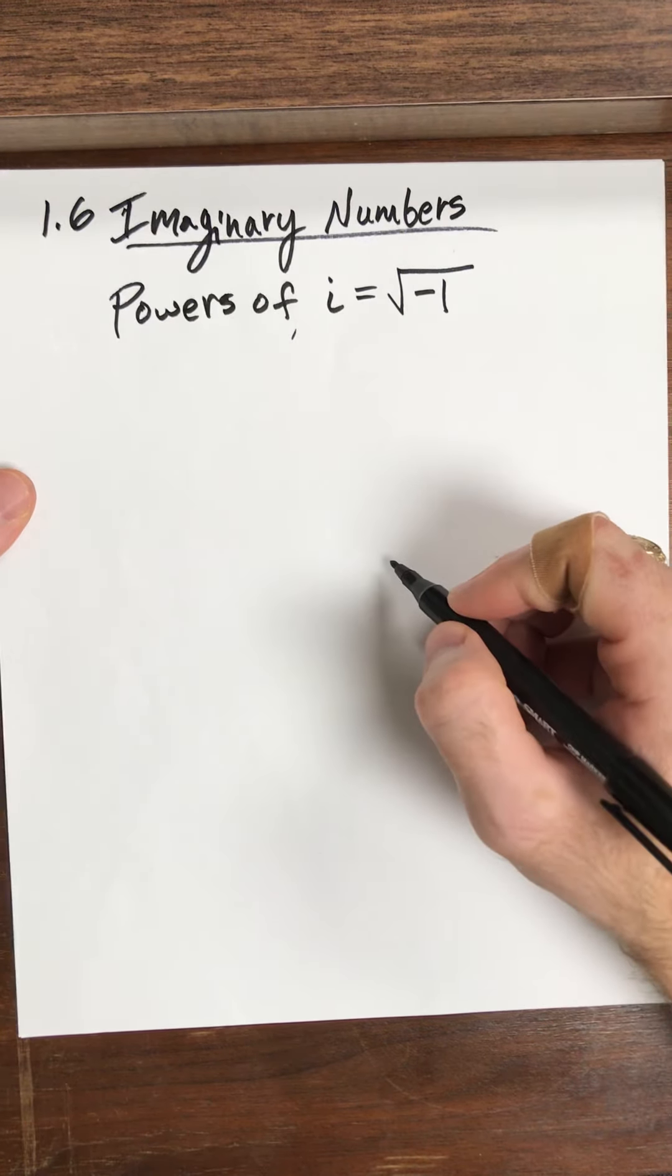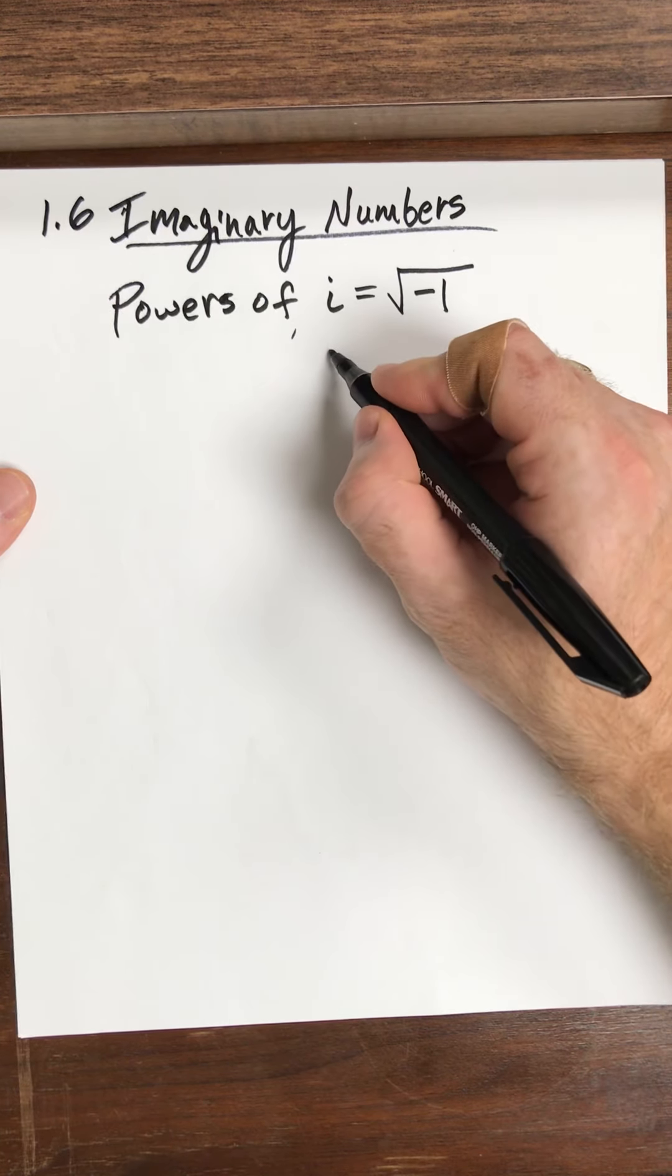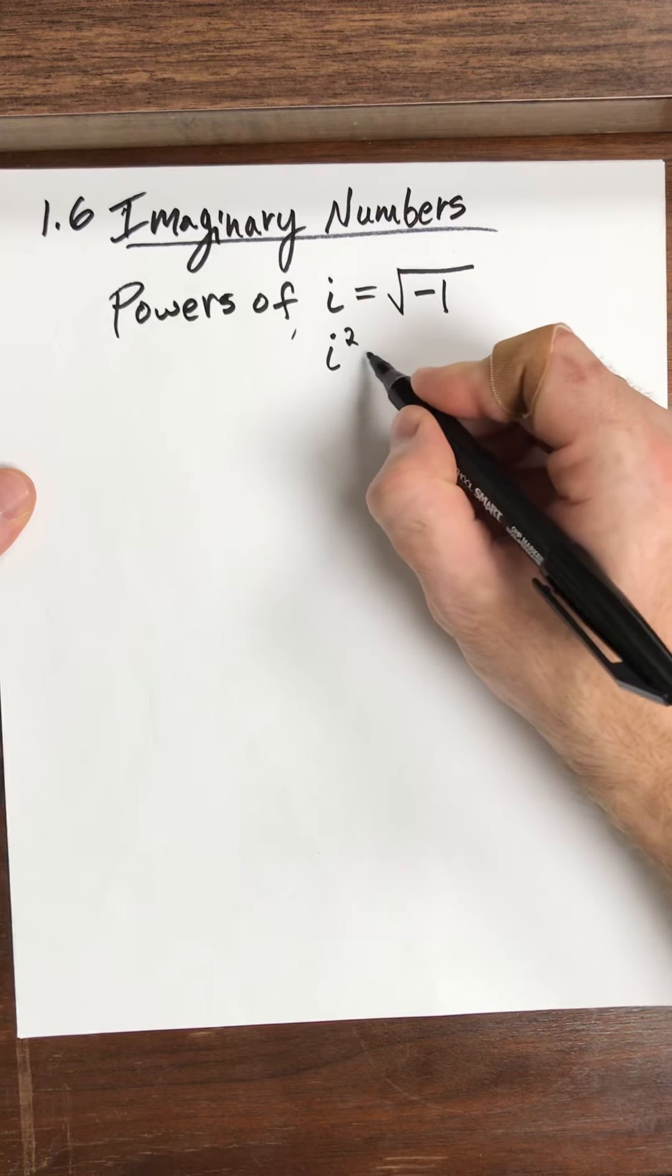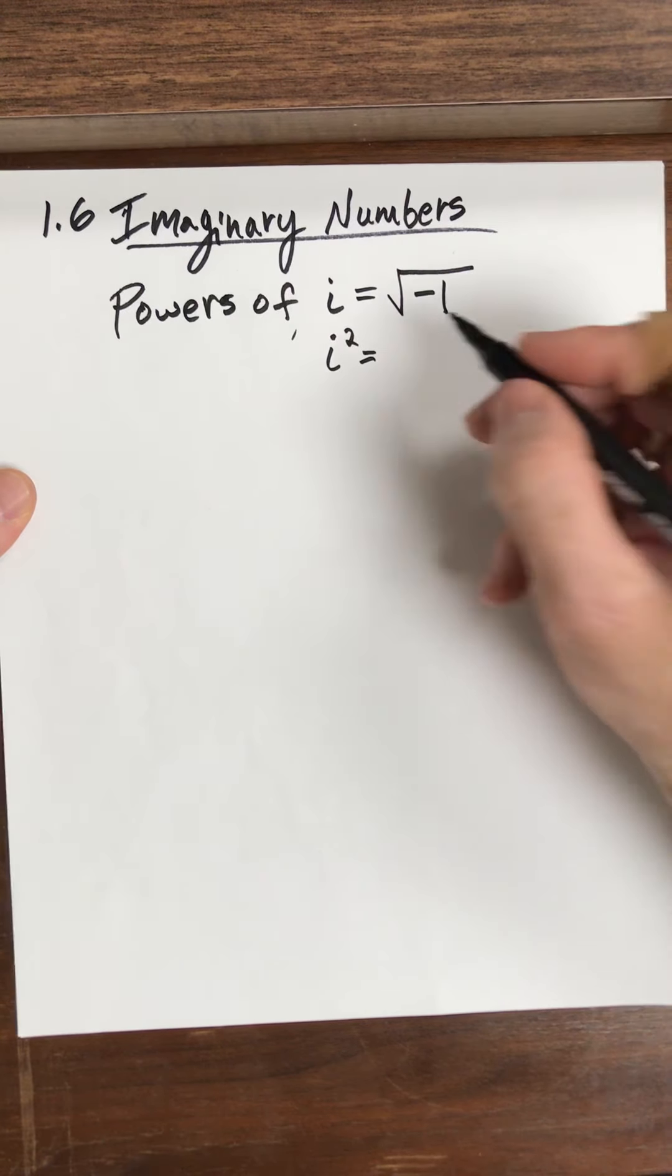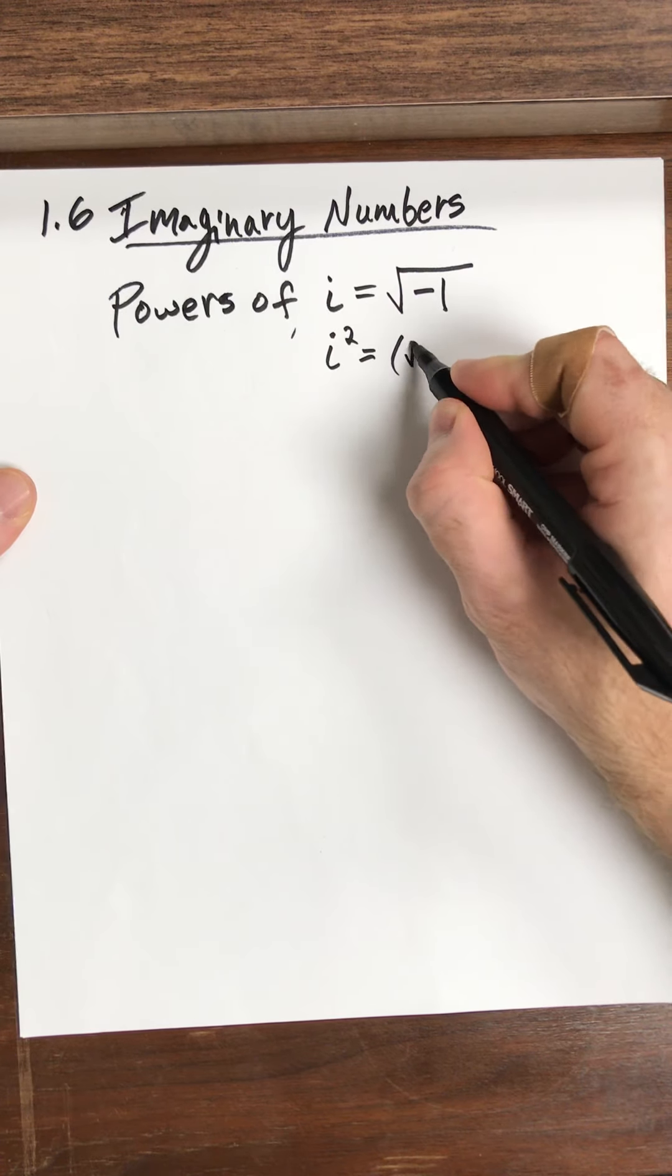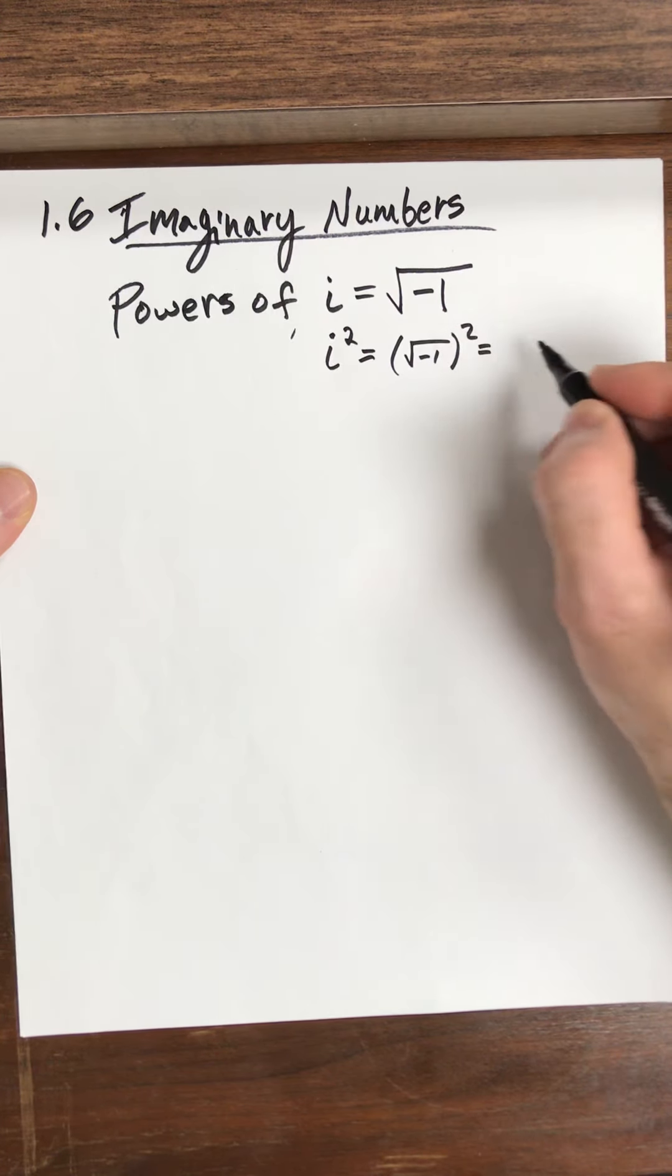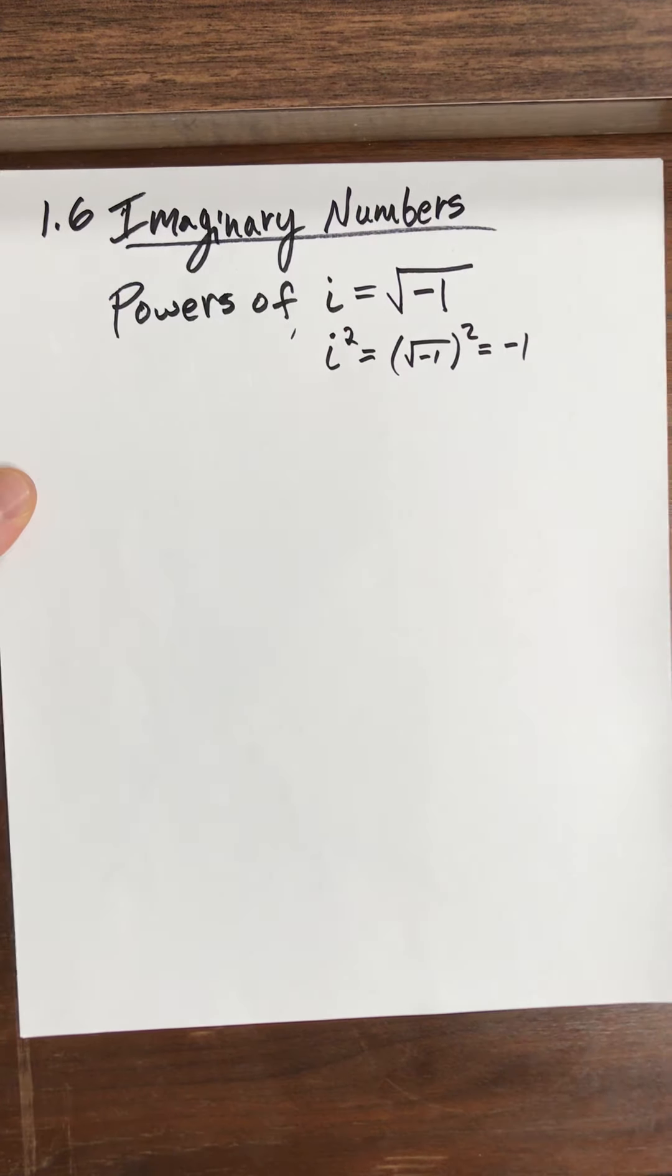Now if i is the square root of negative 1, then i squared, that's going to be what? Well, I just square the square root of negative 1, and that gives me negative 1.